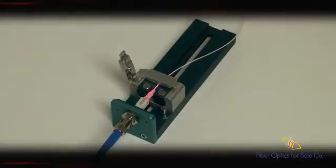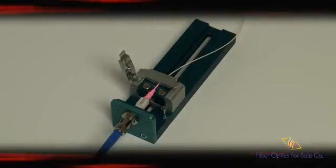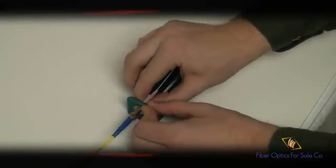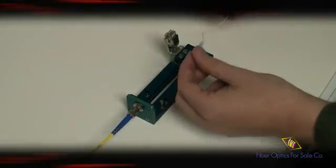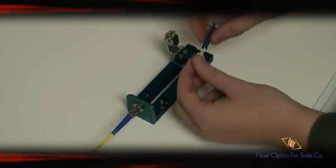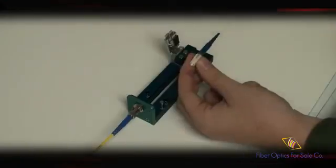For a 30 second cure time, spray the adhesive with one blast of accelerator. After 30 seconds have passed, the adhesive will be hardened enough to handle. Once the adhesive has dried, slide the strain relief boot up to the connector and place the connector housing onto the bobtail.